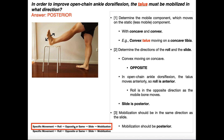We've already determined that roll and slide are in opposite directions. So if the roll is anterior, the slide must be posterior. The mobilization of the talus is always in the same direction as the slide. Because the slide is posterior, in order to improve open chain ankle dorsiflexion, we must mobilize the talus posteriorly.